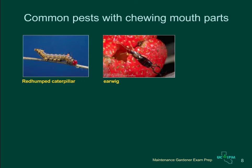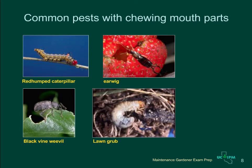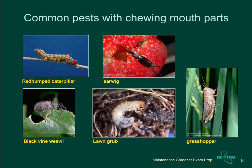Earwigs have pinchers at their tail end, but these cannot hurt people. They feed on leaves, shoots, flowers, and soft fruit. The black vine weevil adult feeds on leaves on plants such as rhododendrons, and its larvae feed on plant roots. Lawn grubs are the larvae of beetles such as the masked chafer. Grubs feed on turf roots, and feeding can be so extensive that the lawn can be rolled up like a carpet. Grasshoppers feed on a variety of plants and usually aren't major pests except where landscapes are next to agricultural or uncultivated lands.